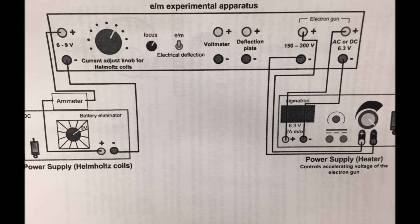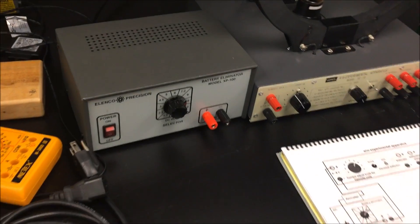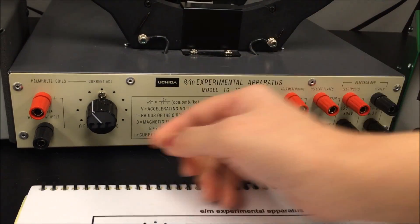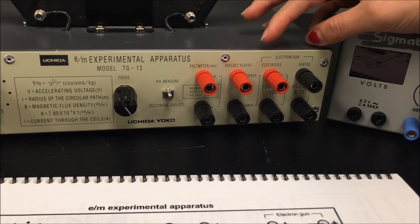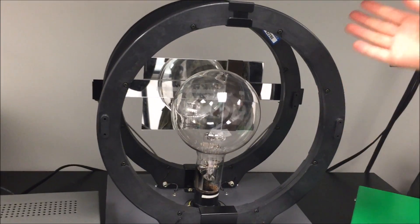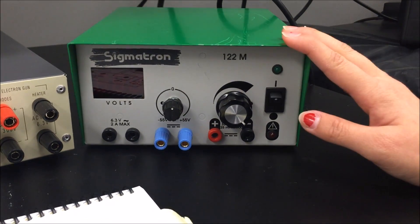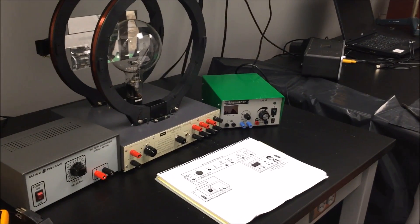In order to conduct this experiment, we will be building the following circuit. I will be introducing the different materials needed. This is the amp meter, the front and the back. The next item is a power supply with positive and negative terminals, with a power on and off switch. Next is the E&M Experimental Apparatus, which has buttons to control the current, what you're measuring, and different voltages for the electron gun. The big coil is going to create a magnetic field. The green machine is the heater, another power supply that controls the accelerating voltage. You will also be needing some wires.